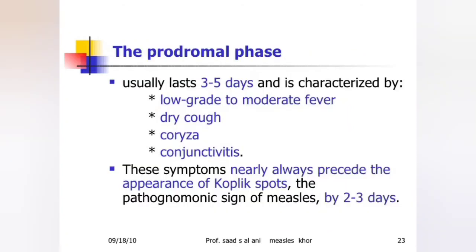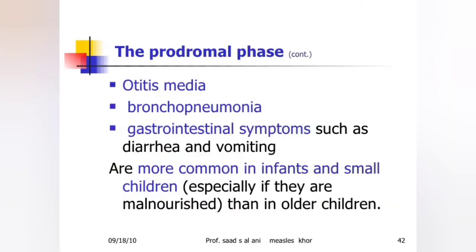Prodromal phase: Usually lasts for 3 to 5 days. Characterized by low-grade to moderate fever, dry cough, coryza, and conjunctivitis. These symptoms nearly always precede the appearance of Koplik spots. The prodromal phase can also have otitis media, bronchopneumonia, and gastrointestinal symptoms such as diarrhea and vomiting — generally common in infants and small children, especially if they are malnourished.